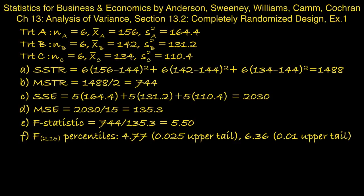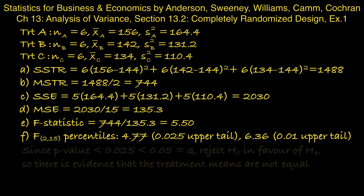And then the percentile that leaves 0.01 in the upper tail is 6.36. And our F-statistic is in between 4.77 and 6.36. So therefore the p-value, which is the upper tail to the right of 5.50, is going to be in between 0.01 and 0.025. So given that the p-value is less than 0.025, it's certainly less than 0.05, which is our significance level. So we reject the null in favour of the alternative. So there is evidence that the treatment means are not equal.